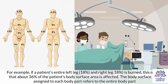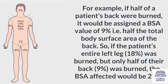The body surface area assigned to each body part refers to the entire body part. For example, if half of a patient's back were burned, it would be assigned a BSA value of 9% — half the total body surface area of the back. So if the patient's entire left leg, 18%, was burned, but only half of their back, 9%, was burned, the BSA affected would be 27%.